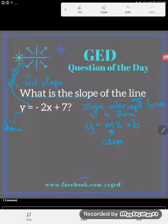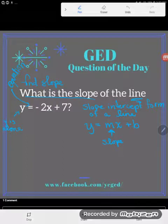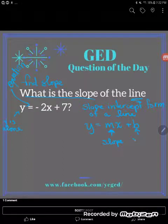And so when I say mx, if I have the y alone, this number that's with x represents a slope. Now, this b is the y-intercept.